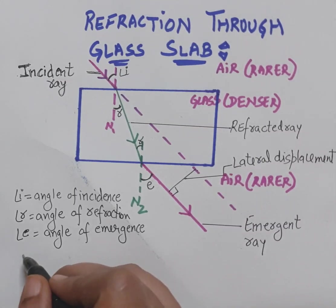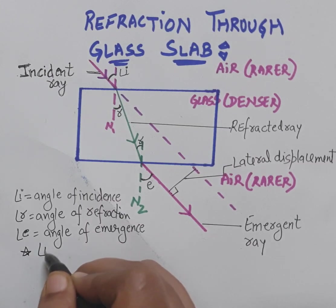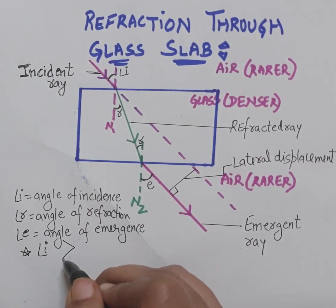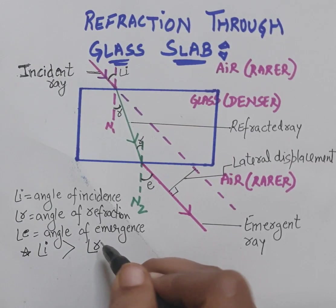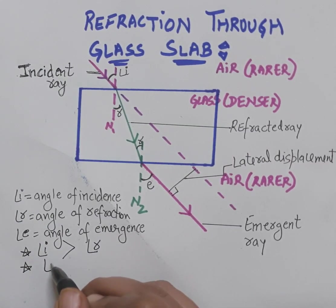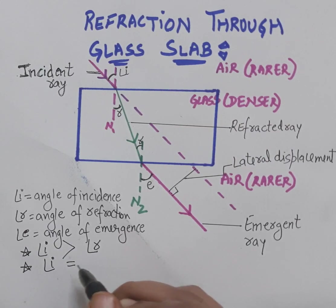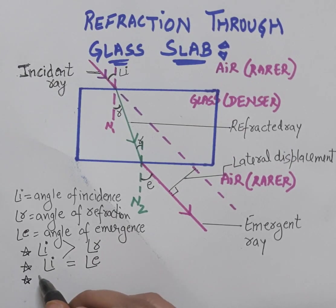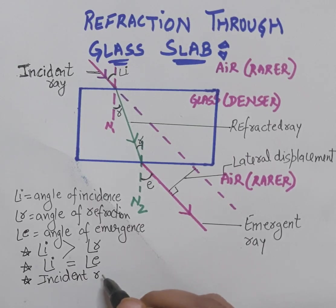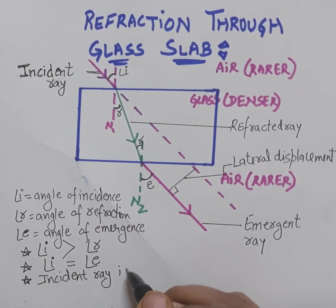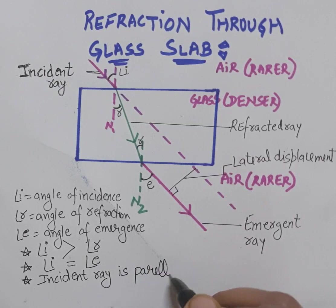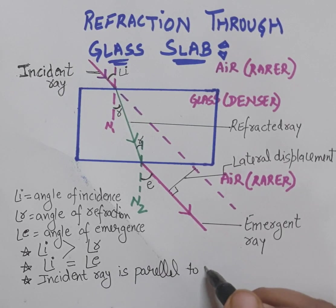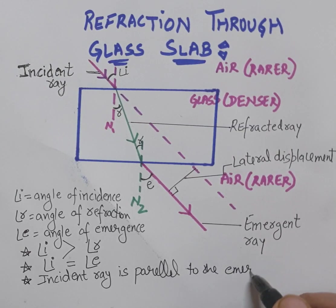Lateral displacement shows how much the incident ray has been displaced from its original position. There are two important things to remember about the glass slab: first, the angle of incidence is greater than the angle of refraction; second, the angle of incidence is always equal to the angle of emergence. One more characteristic is that the incident ray is always parallel to the emergent ray.